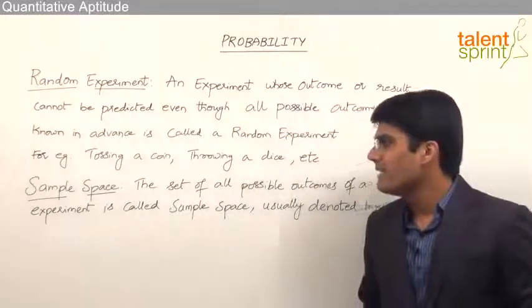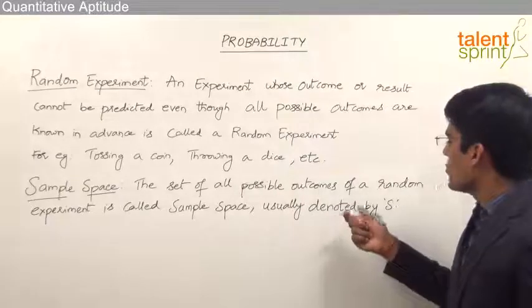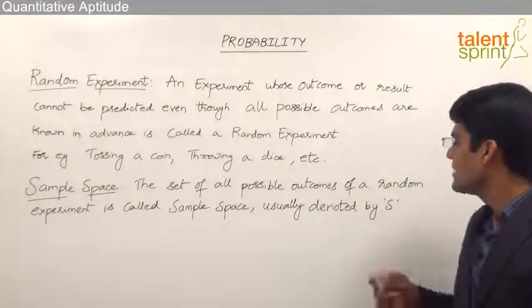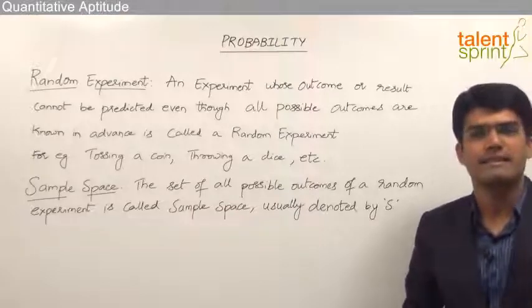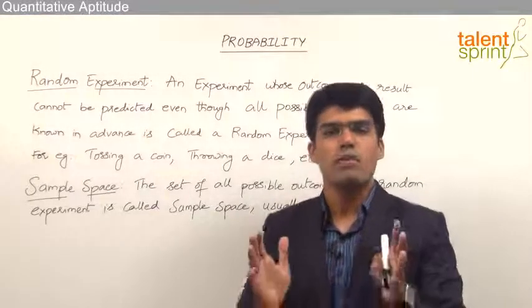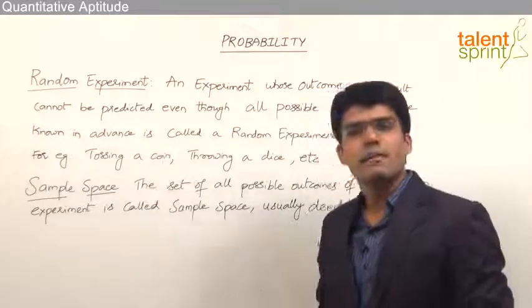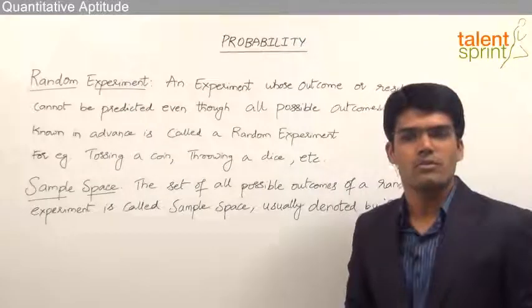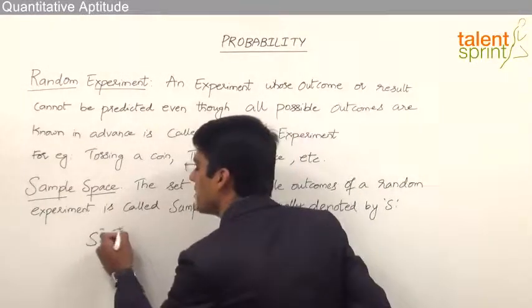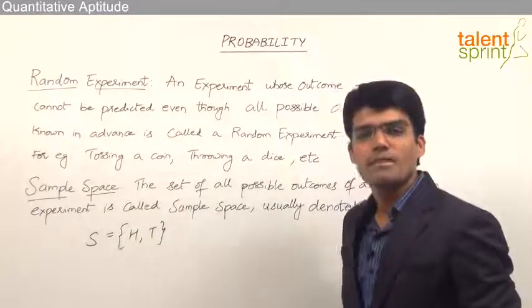The next point we need to understand is sample space. The set of all possible outcomes of a random experiment is called a sample space and is usually denoted by the letter S. For example, when we toss a coin there are two possible outcomes — either a head or a tail. So the sample space for tossing a coin will be {head, tail}.